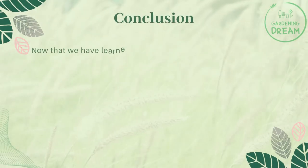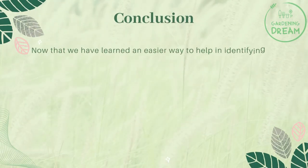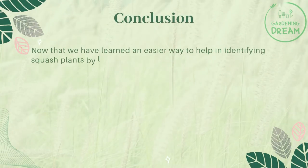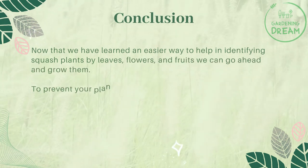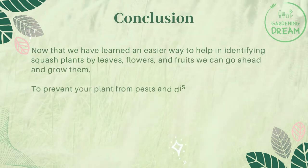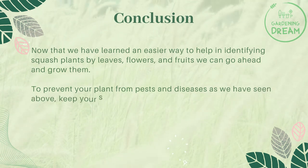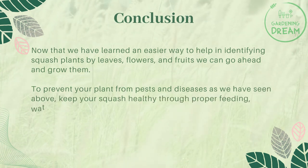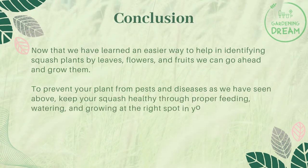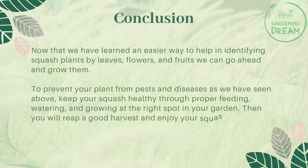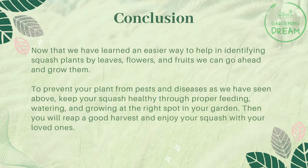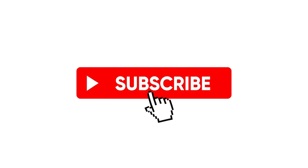Now that we have learned an easier way to help in identifying squash plants by leaves, flowers, and fruits, we can go ahead and grow them. To prevent your plant from pests and diseases, keep your squash healthy through proper feeding, watering, and growing at the right spot in your garden. Then you will reap a good harvest and enjoy your squash with your loved ones. If you liked this video, don't forget to like and subscribe.